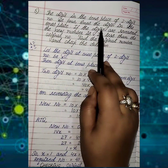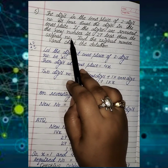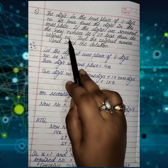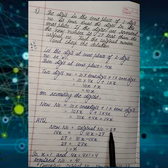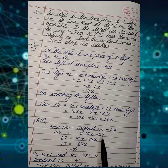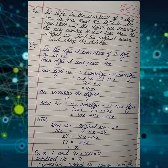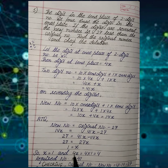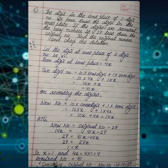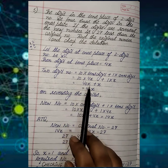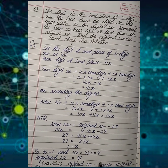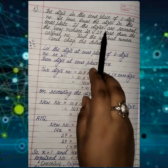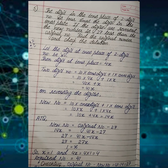Now read the question: if the digits are reversed, the new number is 27 less than the original number. According to the question: new number equals original number minus 27, so 14x equals 41x minus 27. On solving this linear equation, we get x equals 1. So the digit at 1's place is 1, and the digit at 10's place is 4x equals 4. The required number is 41. The new number on reversing is 14. Checking: original minus new equals 41 minus 14 equals 27, which is given in the question. Our answer is correct. Thank you.